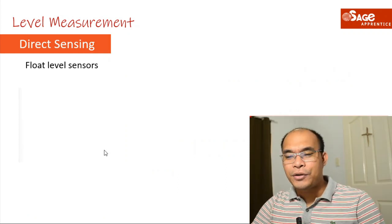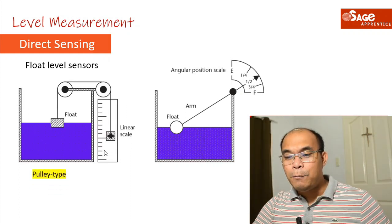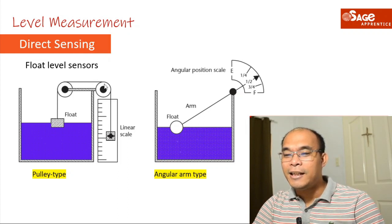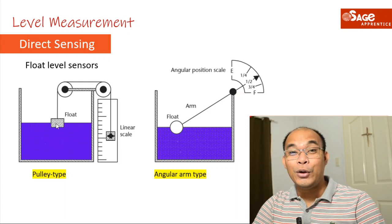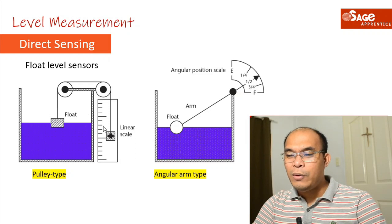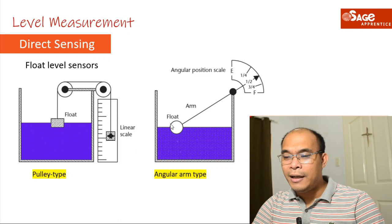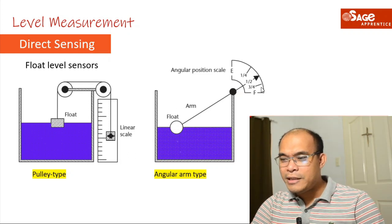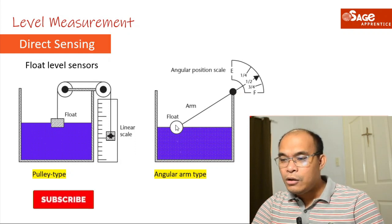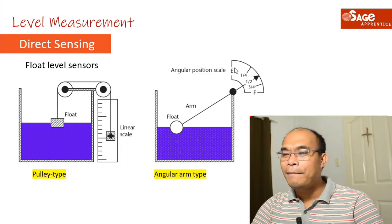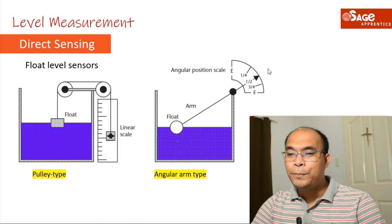Next are float level sensors. There are two types: the pulley type and the angular arm type. For the pulley type, if the level rises, there will be an equivalent change on the indicator. For the angular arm type, as the level rises, the float rises and the indication moves accordingly. When the level drops, the float drops and the arrow moves to the empty side.